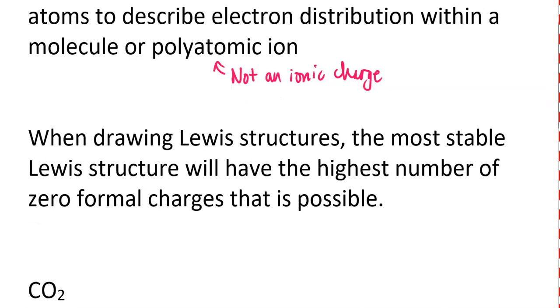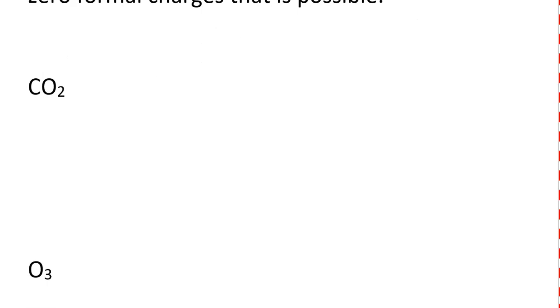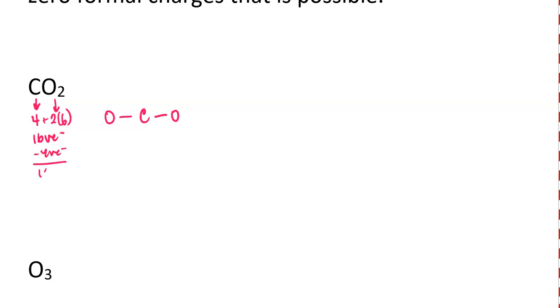Probably the best way to address this is to show you. We've drawn the structure of carbon dioxide quite a bit over the past couple of weeks. Quickly reviewing: we count up the number of valence electrons. Carbon is in group 14, so there are four valence electrons from carbon. Oxygen has six valence electrons, but there are two of them, so two times six is 12, plus four equals 16 total valence electrons. We put the carbon in the center and connect the oxygens to the carbon, which uses four valence electrons.